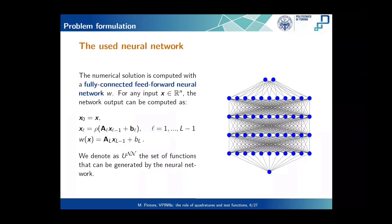Our neural network is a standard fully connected feed-forward neural network, and therefore its output can be seen as the composition of multiple nonlinearities applied to the input vector, which in our case contains only the spatial coordinates. We denote as U_NN the set of functions that can be exactly generated by a neural network of a fixed architecture. Note that this is a set of functions, not a functional space.